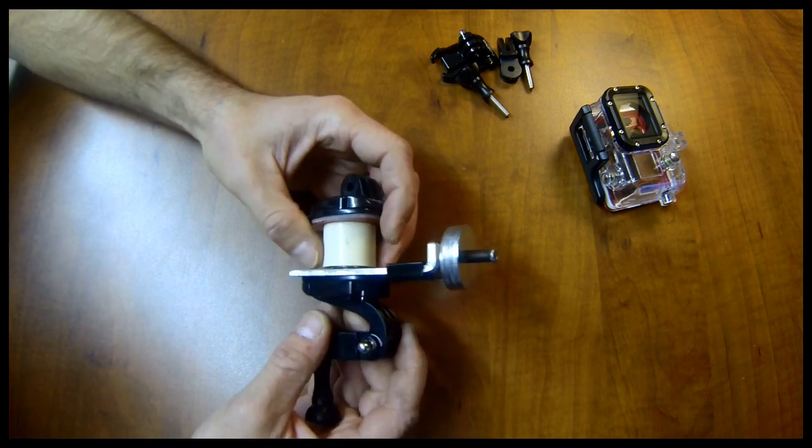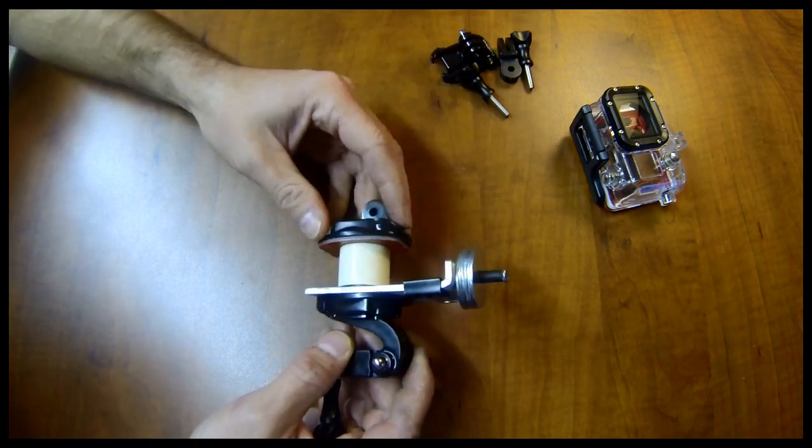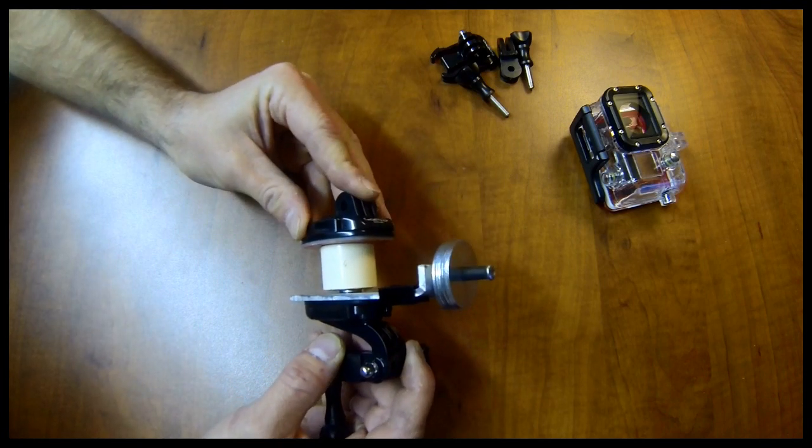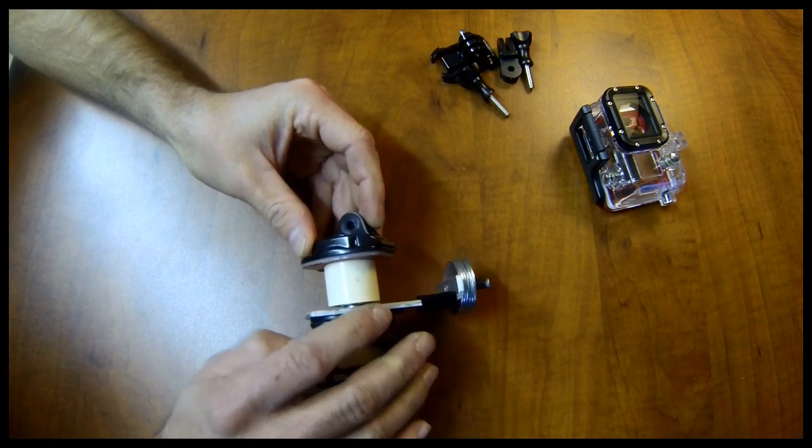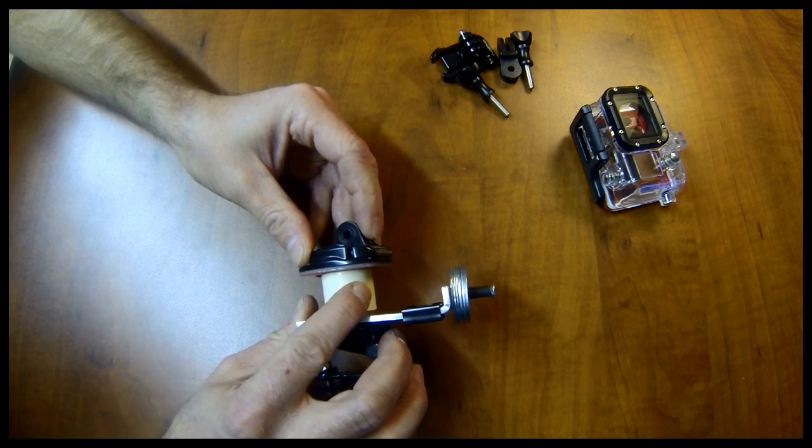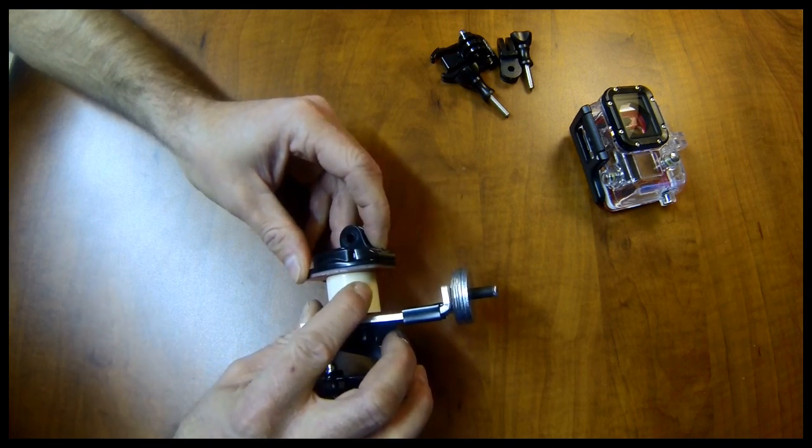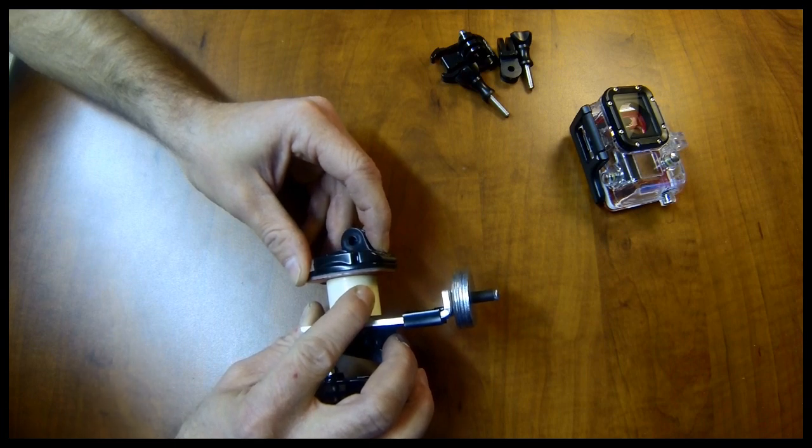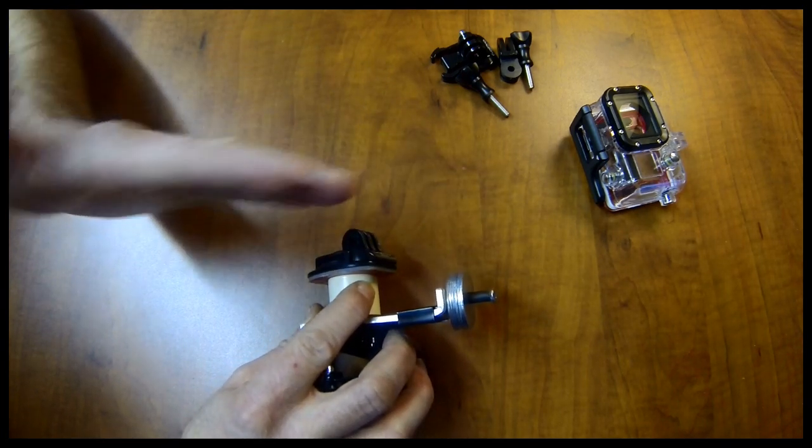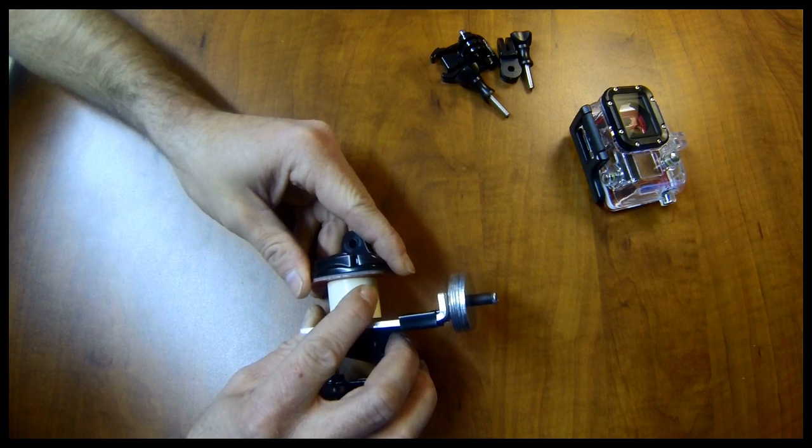If you don't need adjustment on this side, you can just mount the CPVC to whatever item you want to mount it to. For instance, you could just mount it straight to a magnet and then you don't have any adjustment up or down or left or right, but it'd be a more solid adjustment.